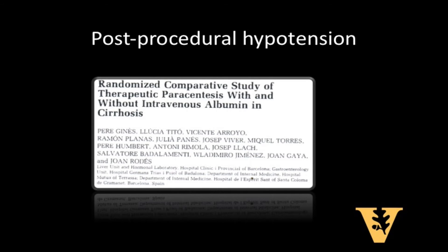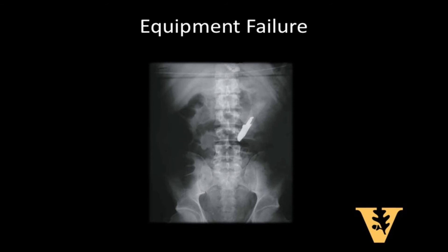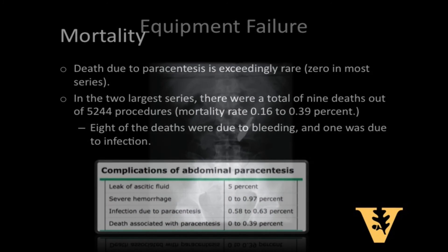This evidence-based practice comes from a widely quoted study in which 105 patients with cirrhosis undergoing large volume paracentesis were randomly assigned to receive albumin solution or no albumin solution. Patients not receiving albumin were more likely to show signs of hemodynamic deterioration including an increase in plasma renin activity and were more likely to develop worsening renal function and/or severe hyponatremia. In the rare event that a piece of tubing is lost intra-abdominally due to equipment failure, order proper imaging to locate it and involve a surgical team for removal.